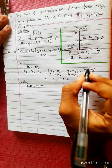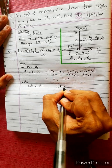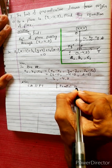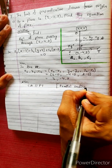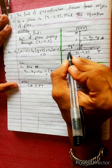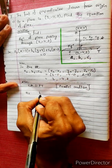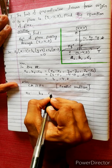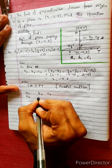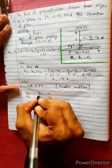We have to write the parallel conditions. Since the two lines are parallel, we write the condition: the direction cosines of line one, A1, B1, C1, are proportional to the direction cosines of the parallel line, A2, B2, C2.